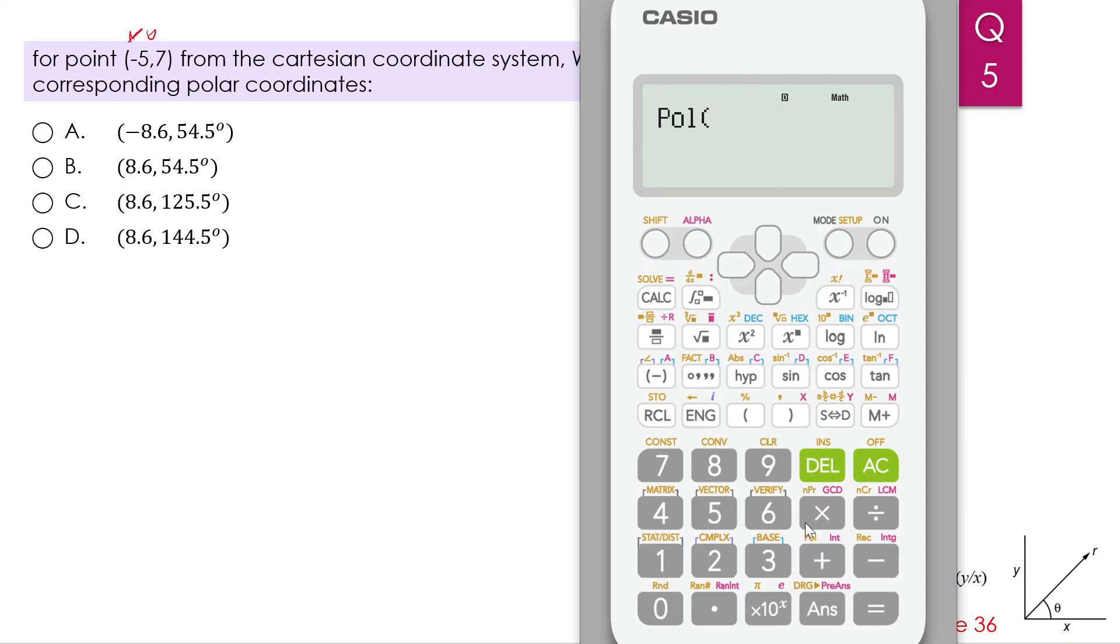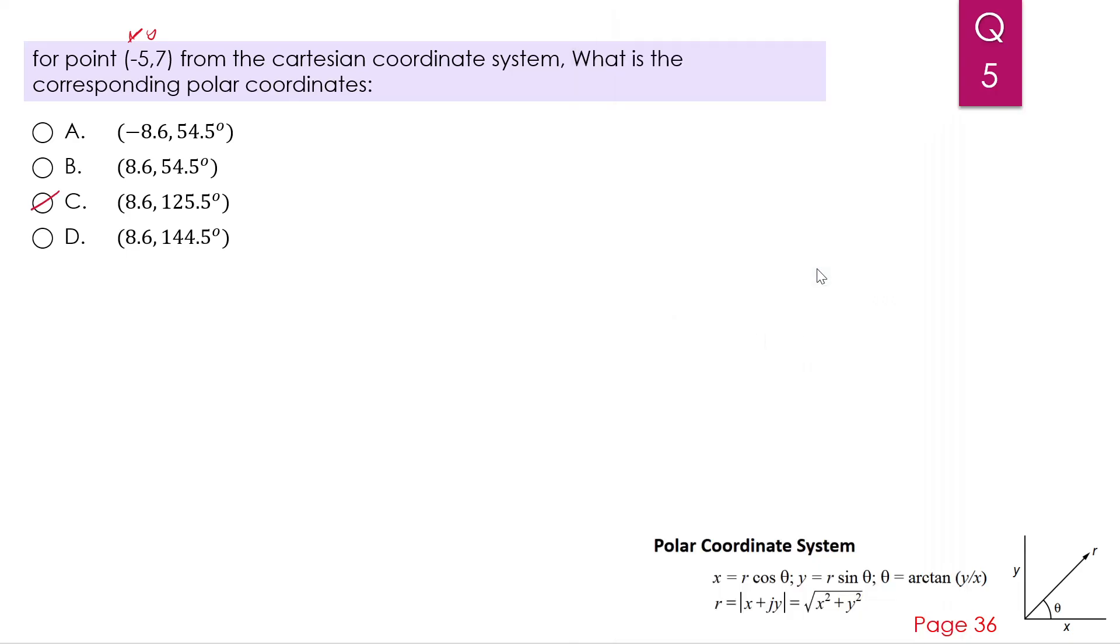Let's go back to the normal mode. So shift, polar. And we input negative 5, comma, and 7. We press equal, so r is 8.6 and theta equals 125. So we have 8.6 and 125.5. So our answer is C.